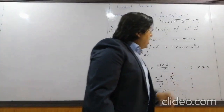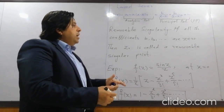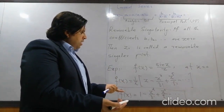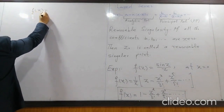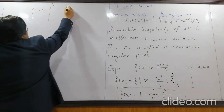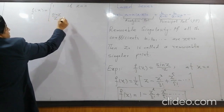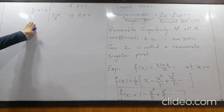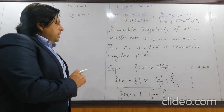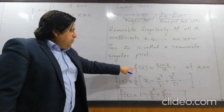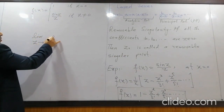It is called a removable singularity because we can remove it. We can redefine the function to obtain another function which is analytic throughout the region: f(z) = 0 if z = 0, and sin z / z if z ≠ 0. There is no singularity for this new function. One more thing to remember: in case of a removable singularity, the limit of the function must exist — that is, lim(z→0) f(z) exists.